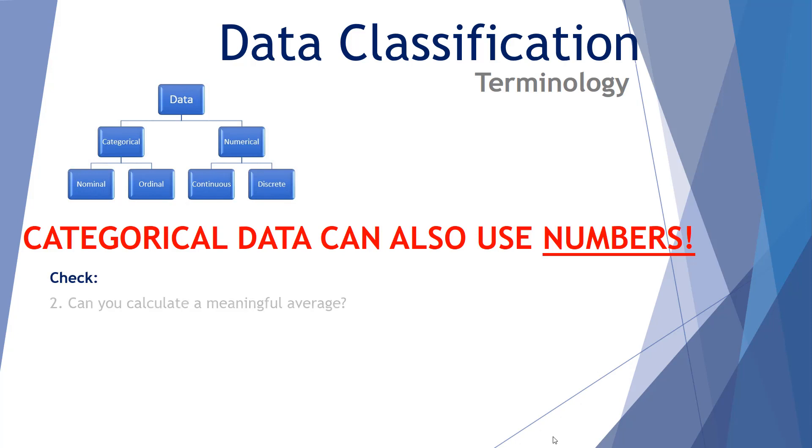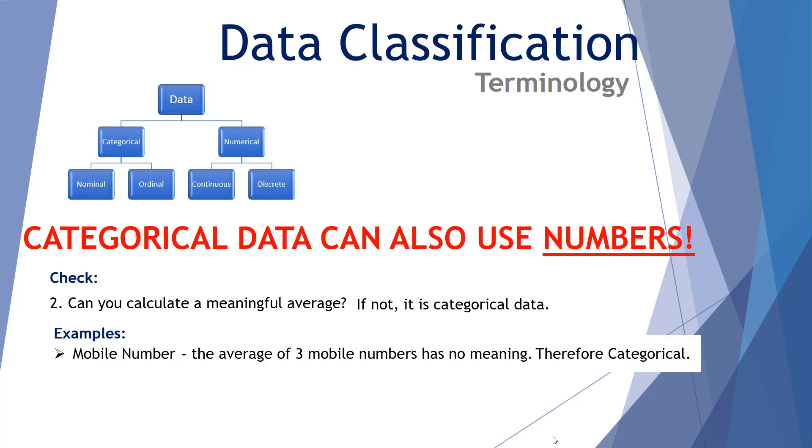A second way to check. Can you calculate a meaningful average from the data? If not, it is categorical data. Example: collection of mobile phone numbers. The average of three mobile phone numbers has no meaning whatsoever. Therefore, it is categorical data. Even though it involves numbers, it represents categorical data. And birth dates. The average of three birth dates has no meaning as well. Therefore, categorical data.